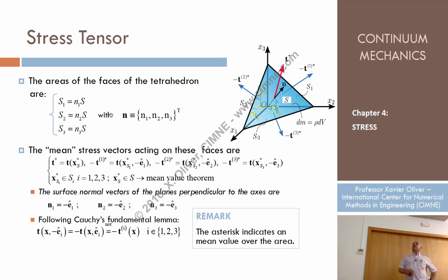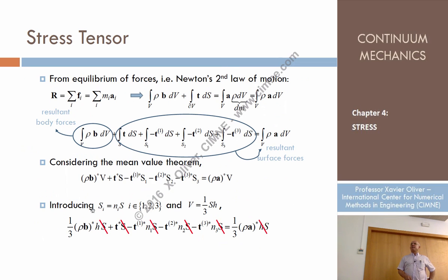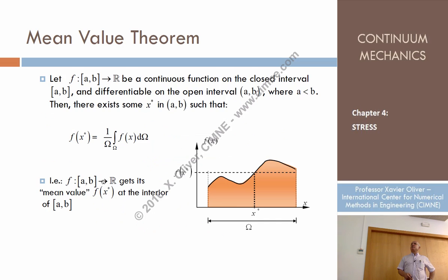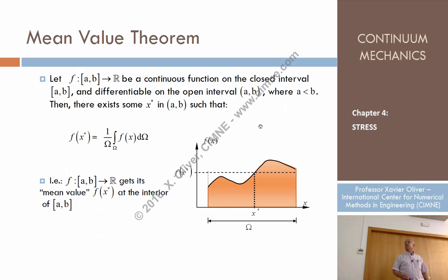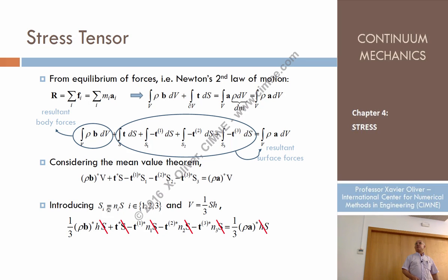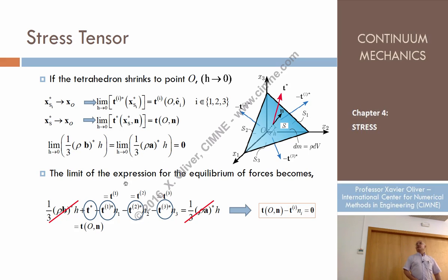Now I substitute: the volume of the pyramid is one-third of the base area S times the height H. I also substitute S1 = N1·S, S2 = N2·S, S3 = N3·S, and the volume again as one-third H·S. Dividing through by S (which appears in all terms), I obtain one simplified equation for the equilibrium of this tetrahedron.